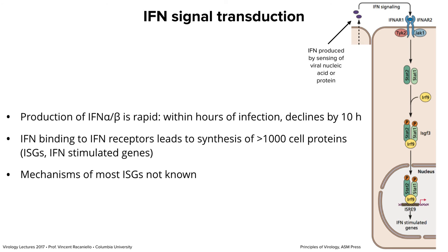Interferon is secreted from the cell, then binds to cell surface receptors — type 1 receptor in this case. The interferon is produced in the infected cell by sensing of viral nucleic acid or protein, or made by other cells in response to viral antigens. Interferon binds the receptor and initiates a signaling cascade — phosphorylation of STAT1 and STAT2 proteins, which associate with a third protein, then enter the nucleus to stimulate transcription of interferon-stimulated genes, or ISGs. Basically, the STAT1-STAT2-IRF9 complex is the transcription factor that goes to the nucleus when interferon binds receptors.